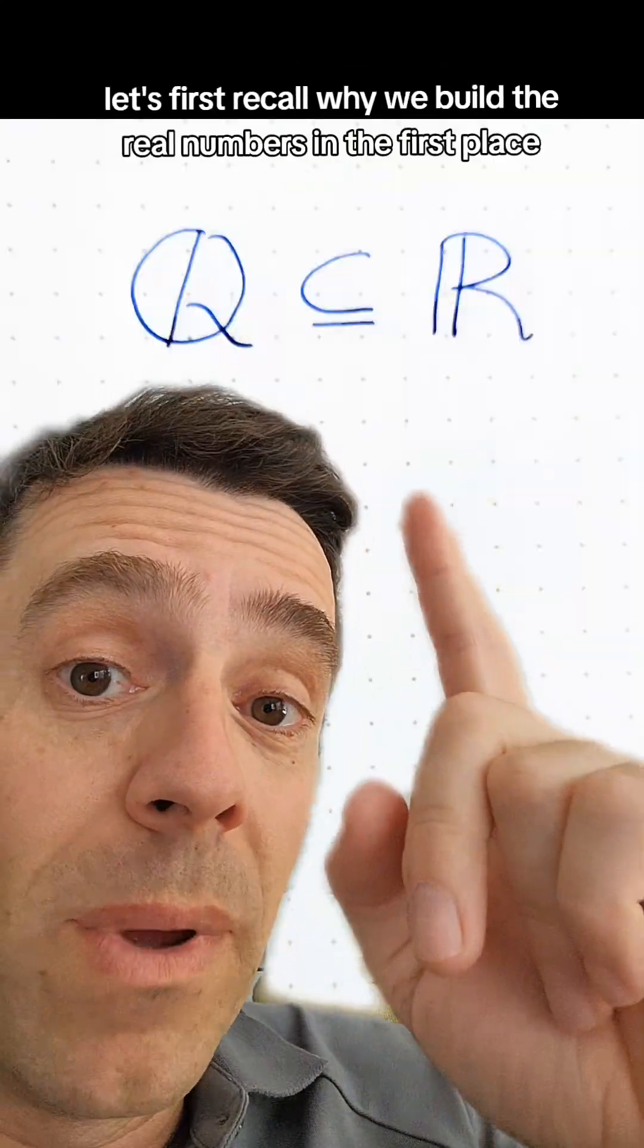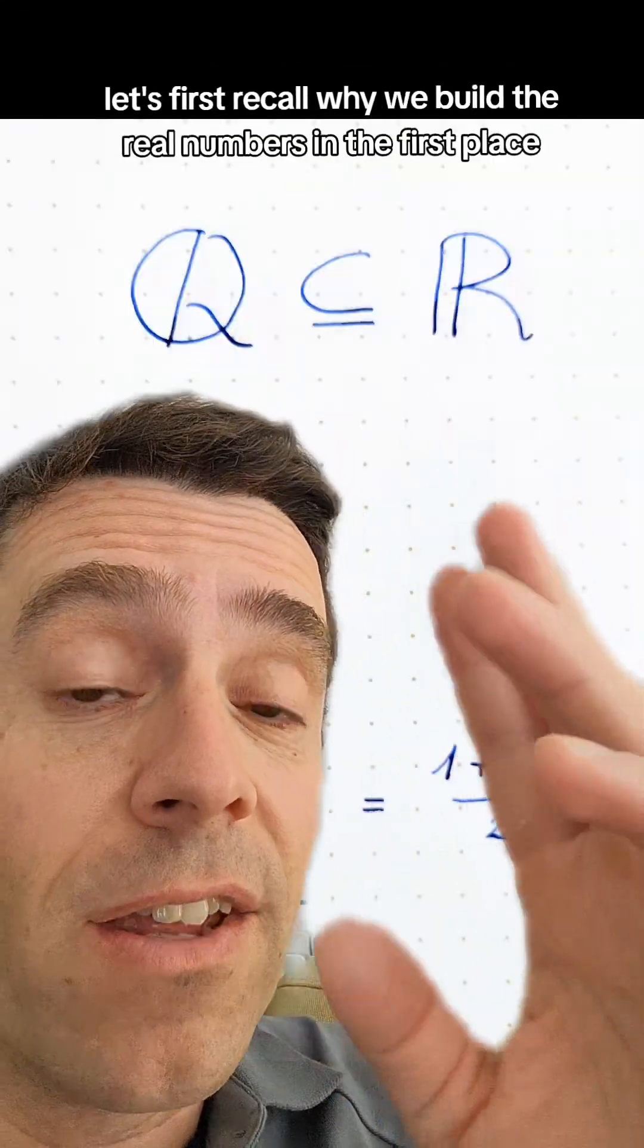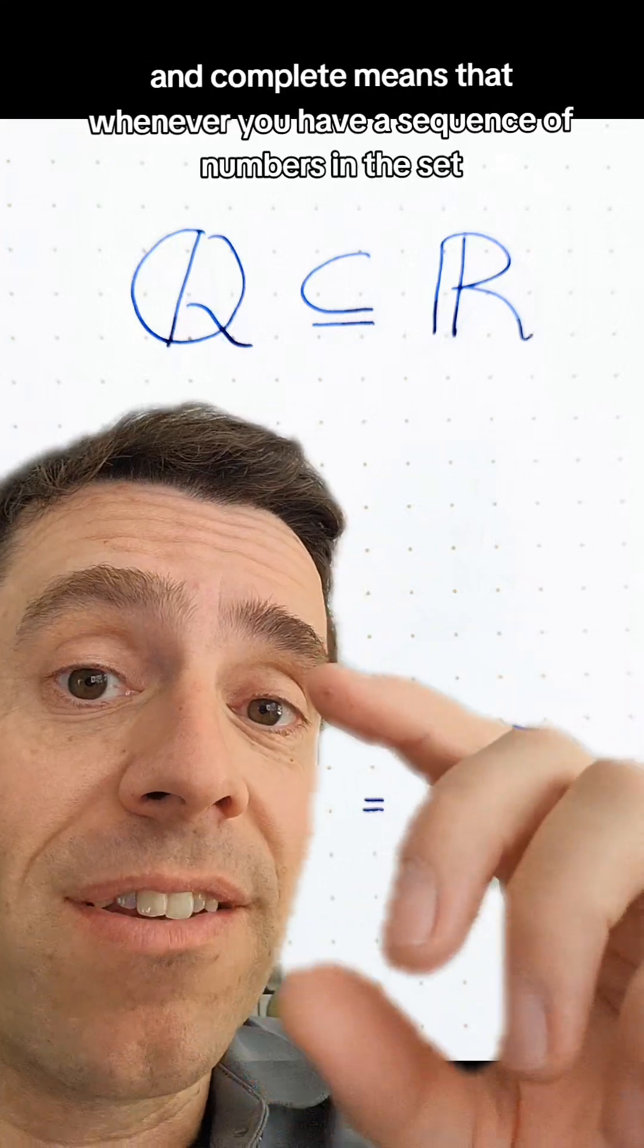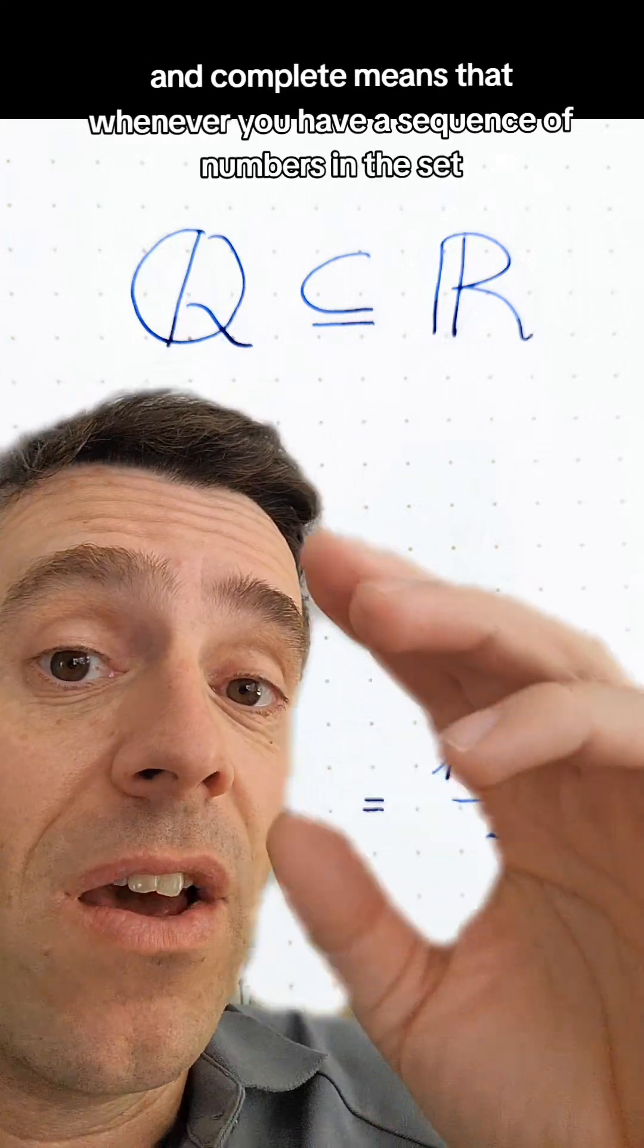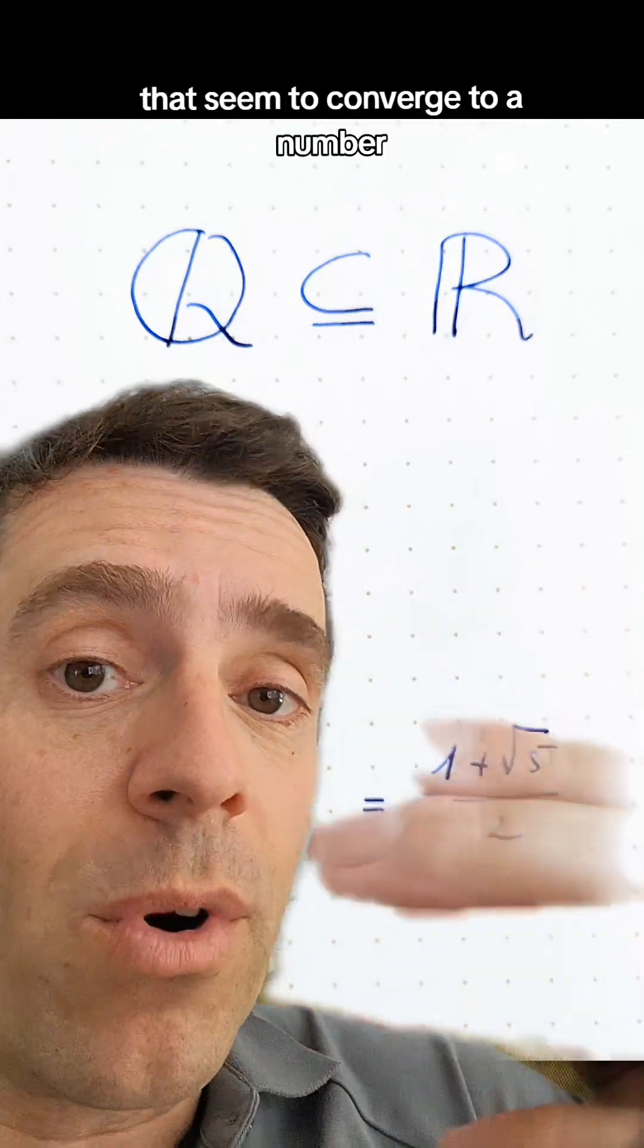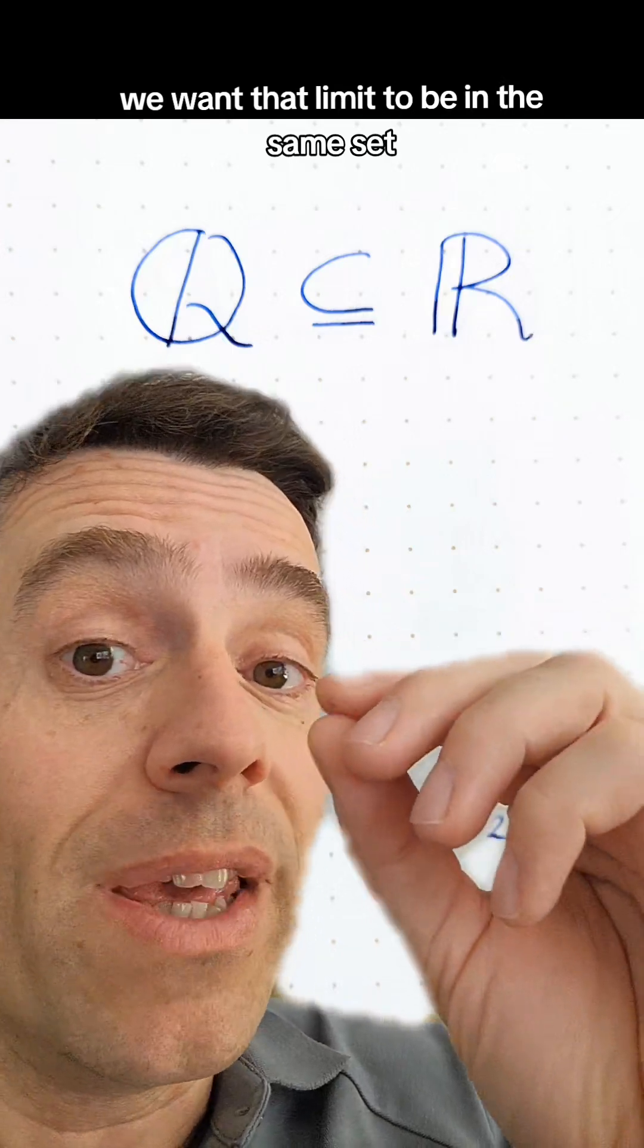Let's first recall why we build the real numbers in the first place. We build the real numbers because Q is not what we call complete. And complete means that whenever you have a sequence of numbers in the set that seem to converge to a number, we want that limit to be in the same set.